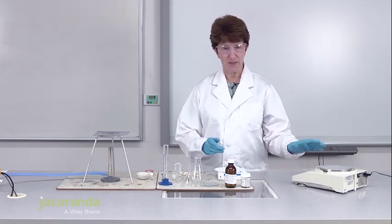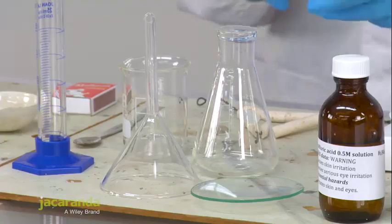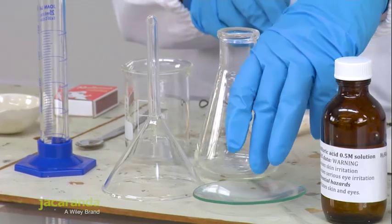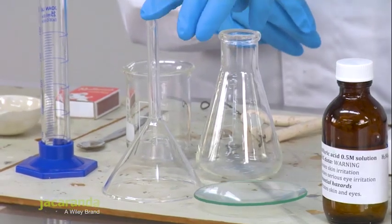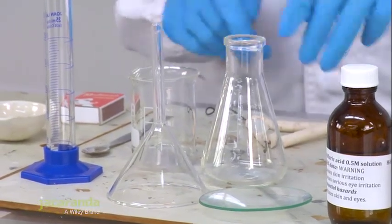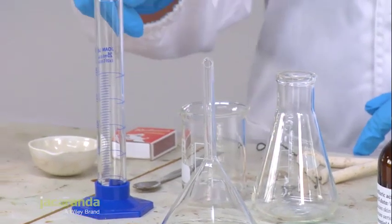To weigh out copper oxide we need a balance. The glassware that we're going to use involves a watch glass, a filter funnel, a conical flask, a 100mm beaker and a measuring cylinder.